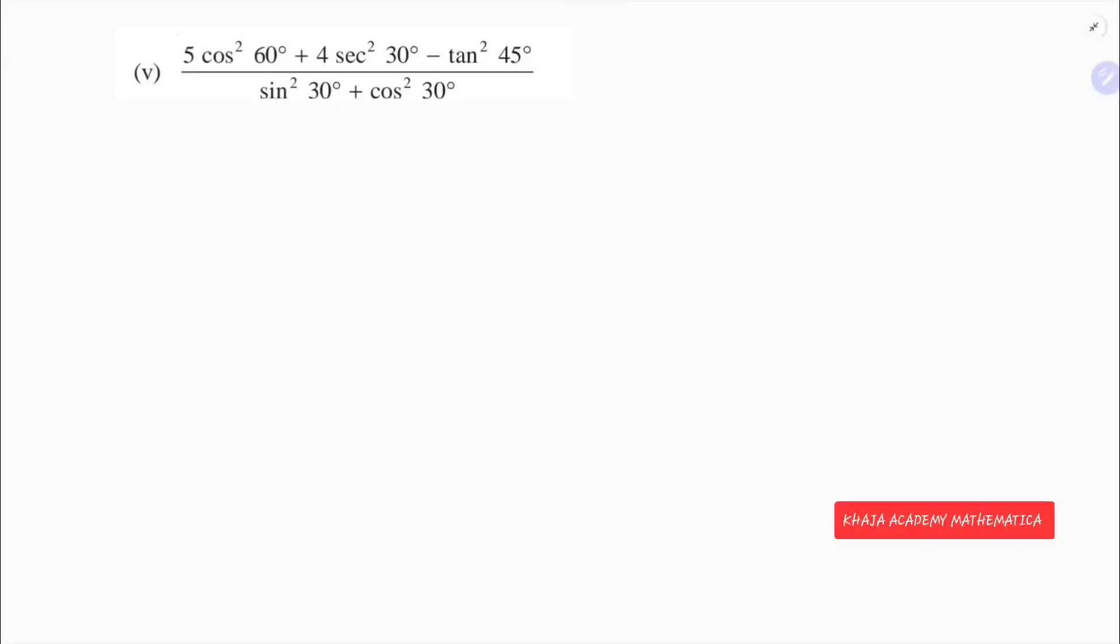So here if we substitute the values, 5 cos squared 60. Cos 60 value is 1 by 2. Plus 4 sec squared 30. Sec 30 value is 2 by root 3, whole square.